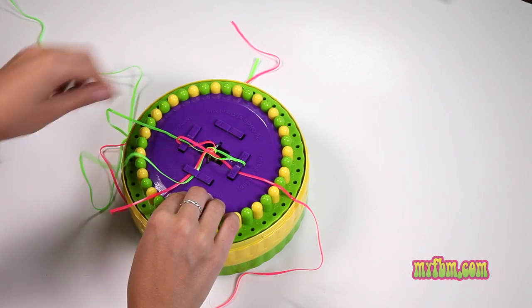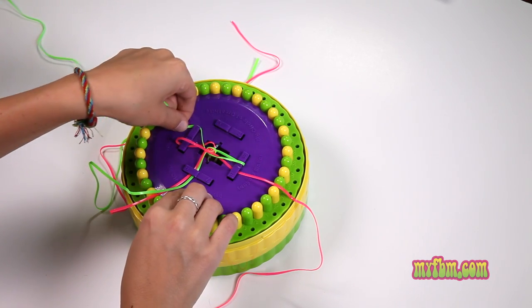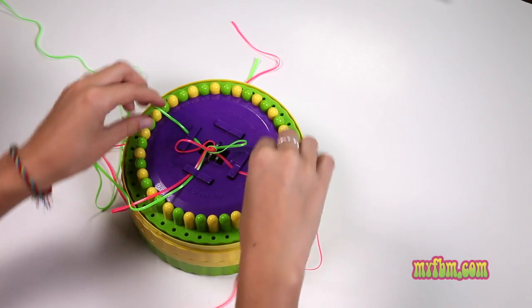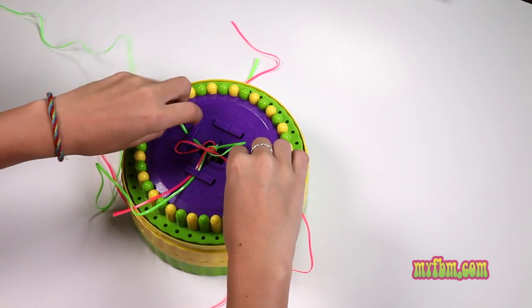Pull it tight and then place it under the number two placeholder. Release your loops for one and five and pull the two and six strings tighter.